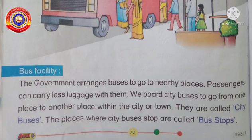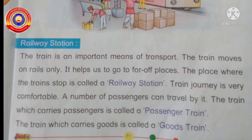Shall we read the textbook? Take page number 71 — Railway Station. The train is an important means of transport. It moves on rails only and helps us to go to far-off places. The place where trains stop is called a railway station. Train journey is very comfortable and a number of passengers can travel by it. The train which carries passengers is called a passenger train; the train which carries goods is called a goods train.